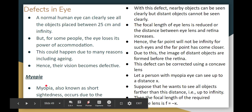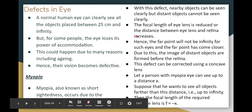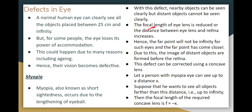Myopia is short-sightedness. In this condition, the eyeball is elongated. This is a defective state — distant objects are not seen clearly. The focal length of the eye lens is reduced, and the far point is very close. Distant objects form their image in front of the retina instead of on it.